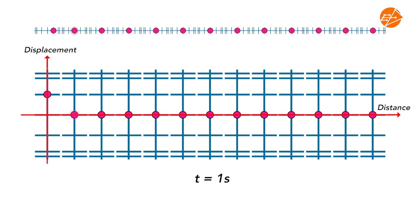The second particle is disturbed by the first particle due to the attractive forces between them. At t equal to 2 seconds, we see the initial movement of the second particle from its equilibrium position. The first particle also moves further from its equilibrium position compared to the first second. The displacement of these two particles from the equilibrium positions are plotted on the graph. The distance of the second particle is its length from the first particle or source of disturbance. On the displacement-distance graph, the point is plotted as shown, and the length of the second particle from its equilibrium position is shown.